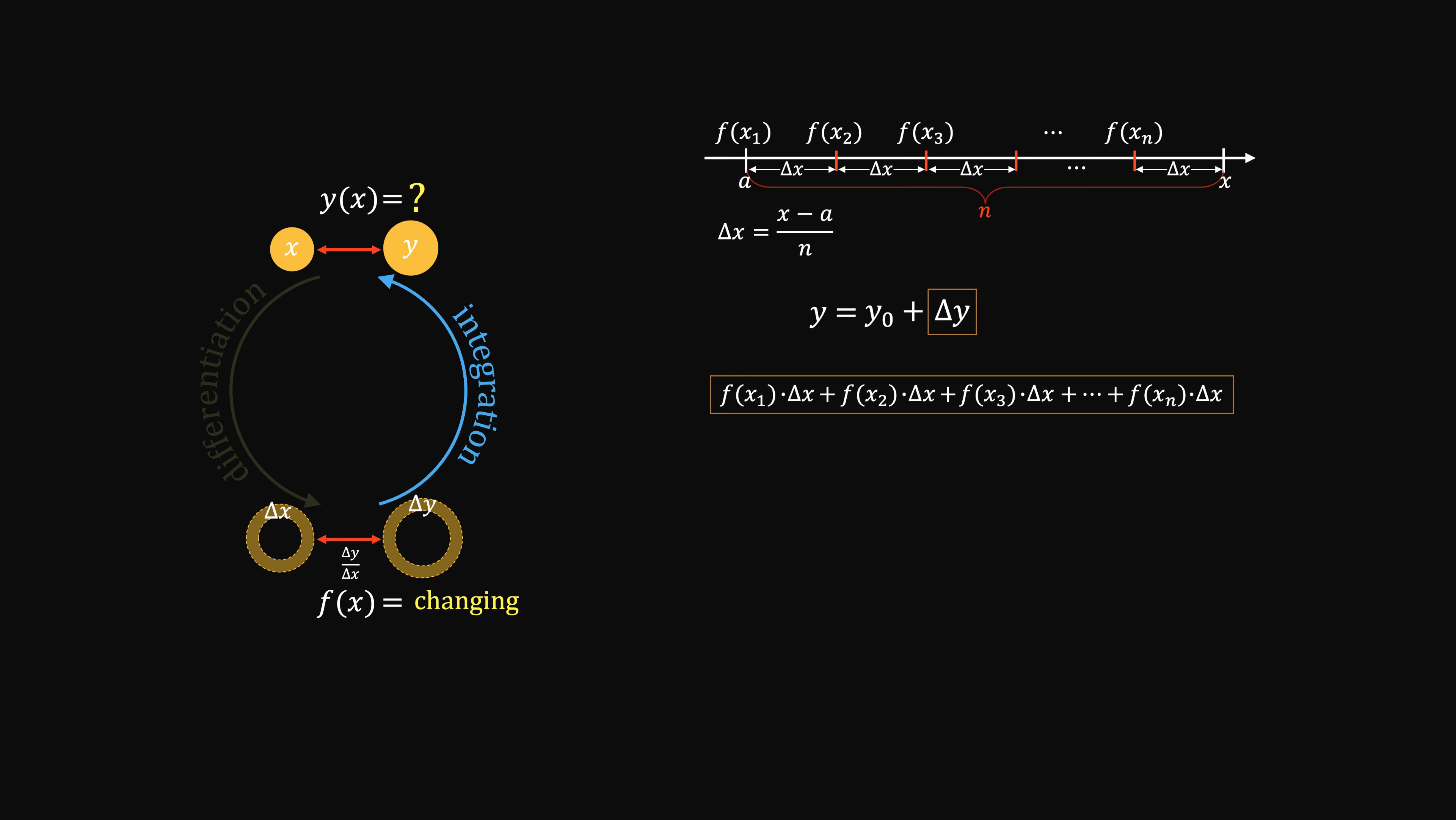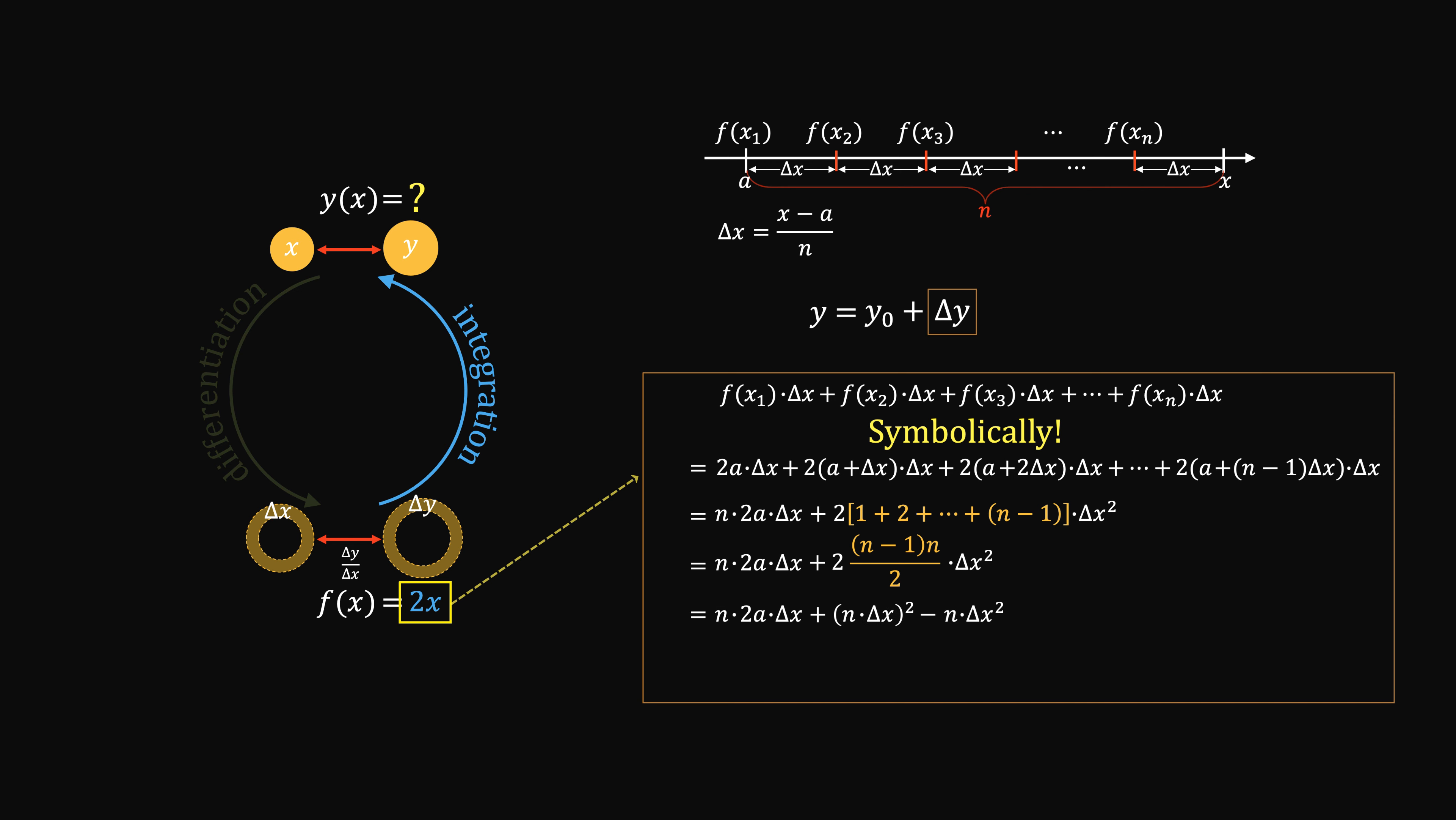But the magic happens when you carry out the calculation symbolically. Say, the velocity is linear. When you use it to find out the incremental velocities, keep them abstract. Then you can use algebra to aggregate and simplify terms.